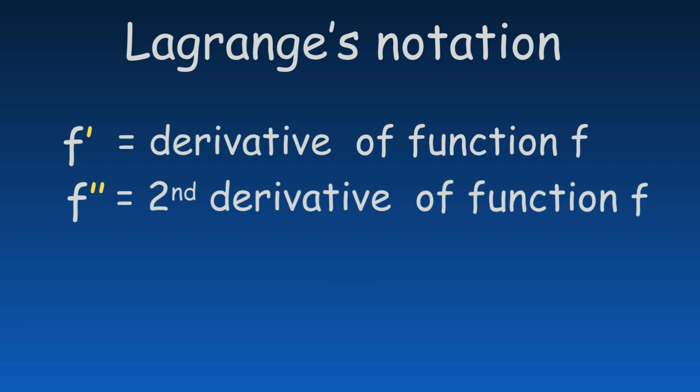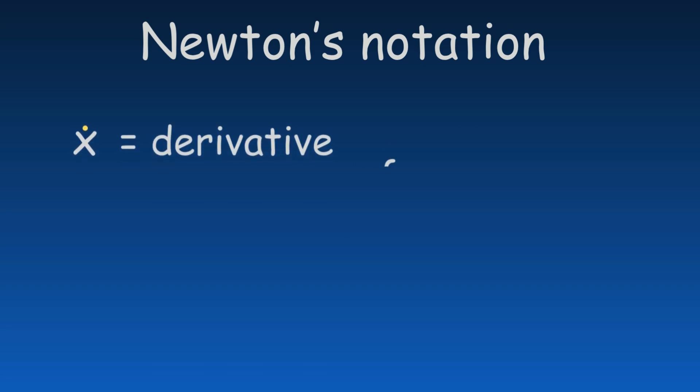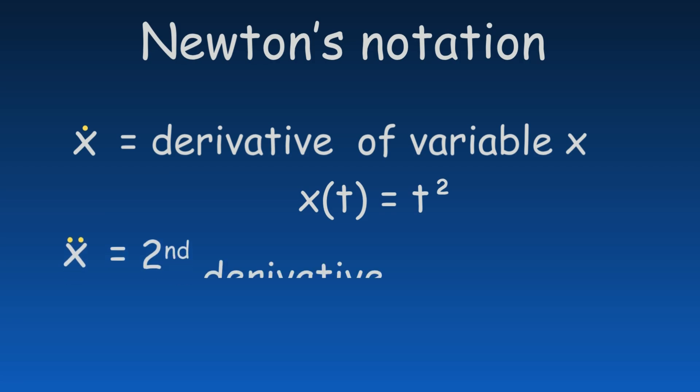In Lagrange's notation, an apostrophe is used to indicate the derivative of a function. A second apostrophe stands for the second derivative, a third for the third derivative, and so on. In Newton's notation, a dot above the variable is used to denote a derivative, typically with respect to time. Adding a second dot represents the second derivative in time.